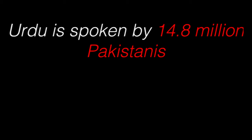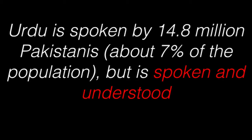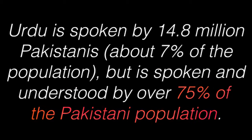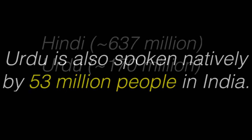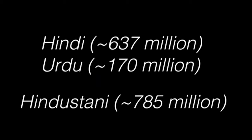Urdu is spoken as a primary language by 14.8 million Pakistanis, accounting for 7% of the population, but the language is spoken and understood by over 159 million Pakistanis, about 75% of the population. Urdu is also spoken by 53 million people in India. Together, Hindustani has over 785 million speakers, making it the third most widely spoken language on earth.